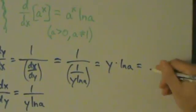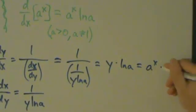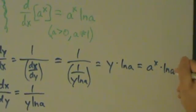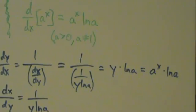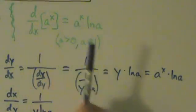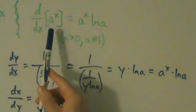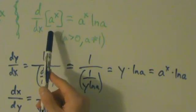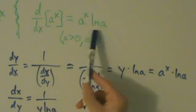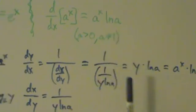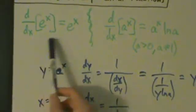So this is a to the x times the natural log of a. So that's the more general case up here. And notice, what happens if a is equal to e? Then we have e to the x natural log of e, and what is natural log of e? It's just 1. So really, this is just a special case of that.